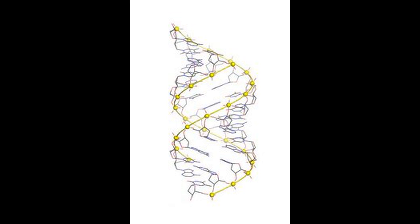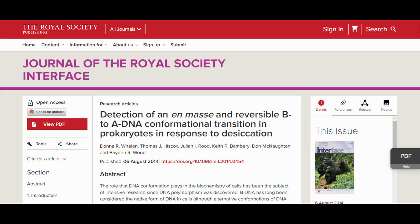Dehydration drives the reconfiguration of B-DNA into the A-form. In a paper from 2014, Whelan et al. documented their observation that bacteria protect their DNA by turning it into A-DNA in response to extremely dry conditions.